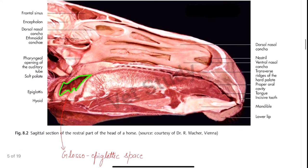Now let's talk about the horse or equines. The cavum oris is longer and narrower in equines, as the face of the equine is more elongated than that of cattle and buffalo. The vestibule is less capacious in comparison to cattle. The mucous membrane of the lips and cheeks may be pigmented.